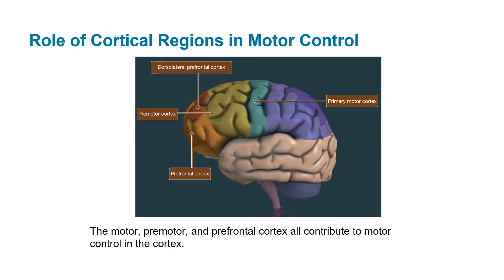More than just the motor cortex contributes to motor control. You have the primary motor cortex we just talked about, as well as the premotor cortex, which deals with movement-related things. Then you have the dorsolateral prefrontal cortex and the prefrontal cortex itself, which are also involved with movement but additionally handle decision making and rational thought. The prefrontal cortex is where that activation starts.